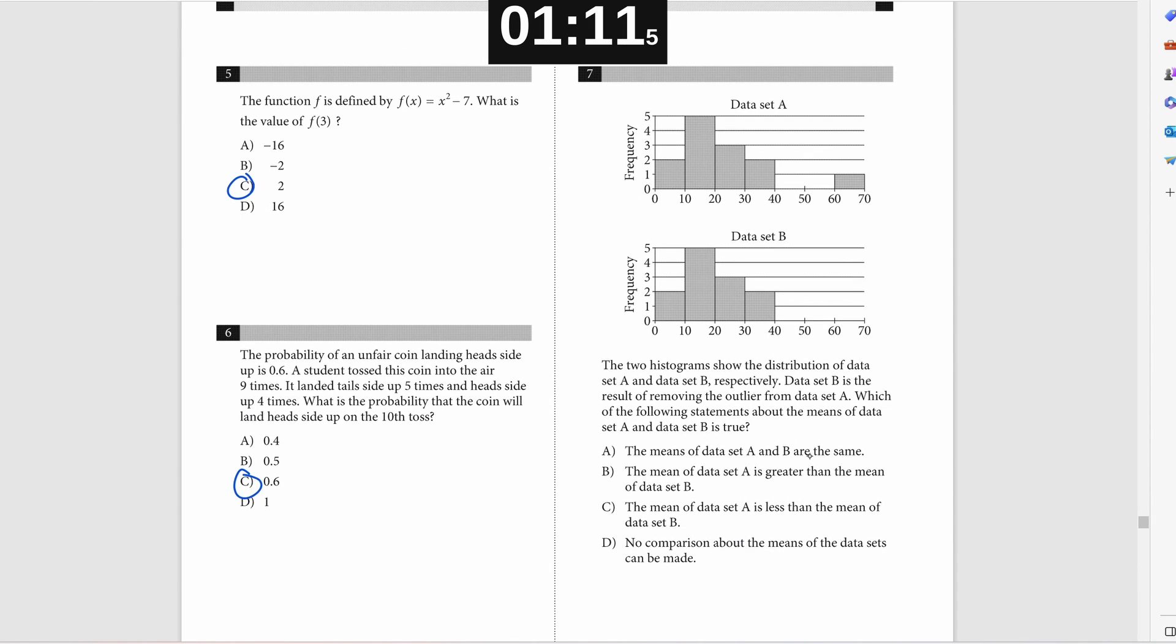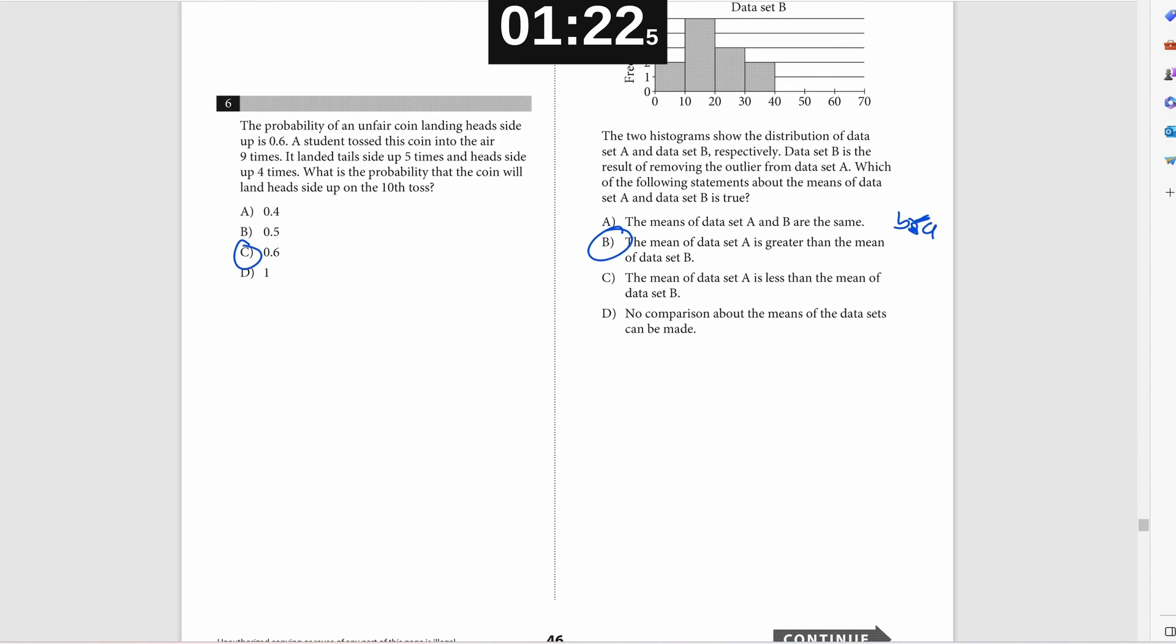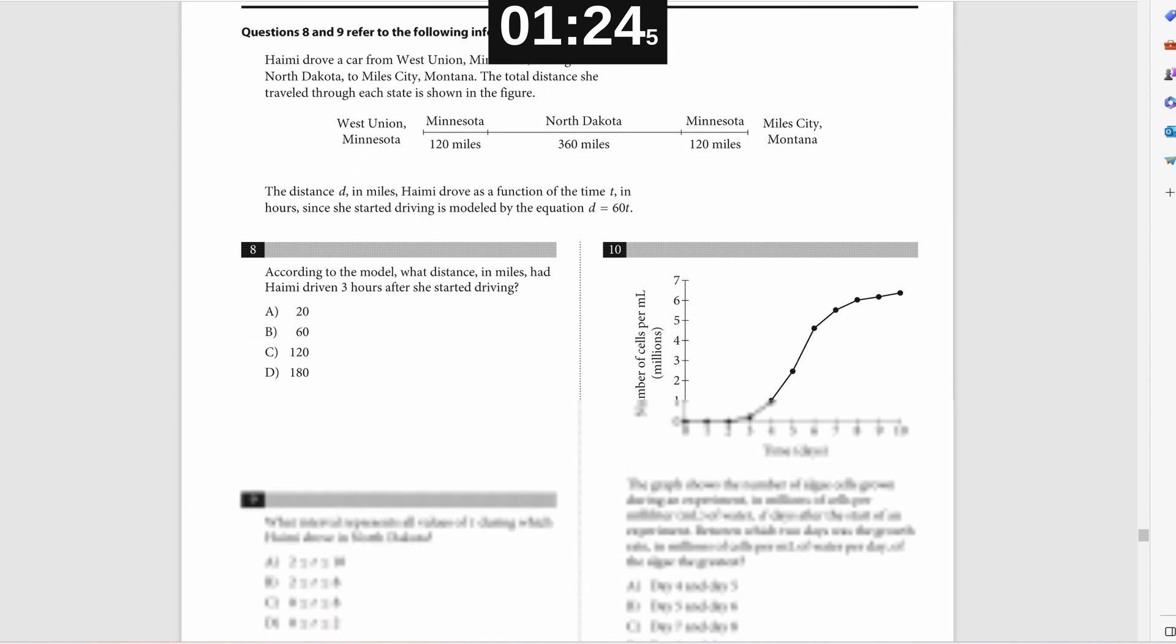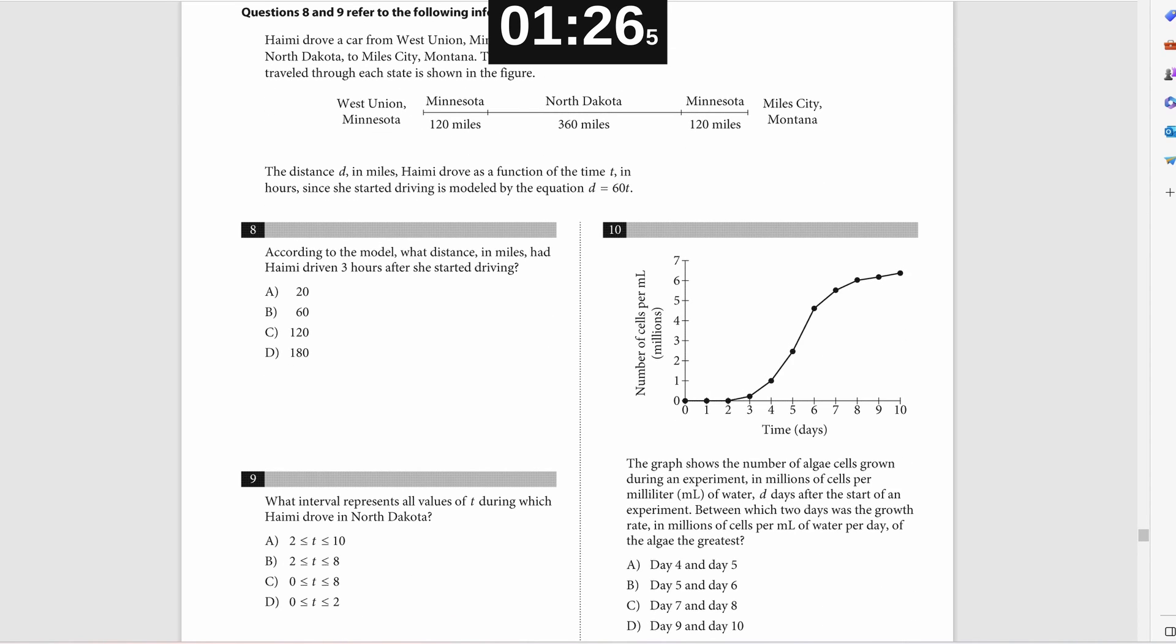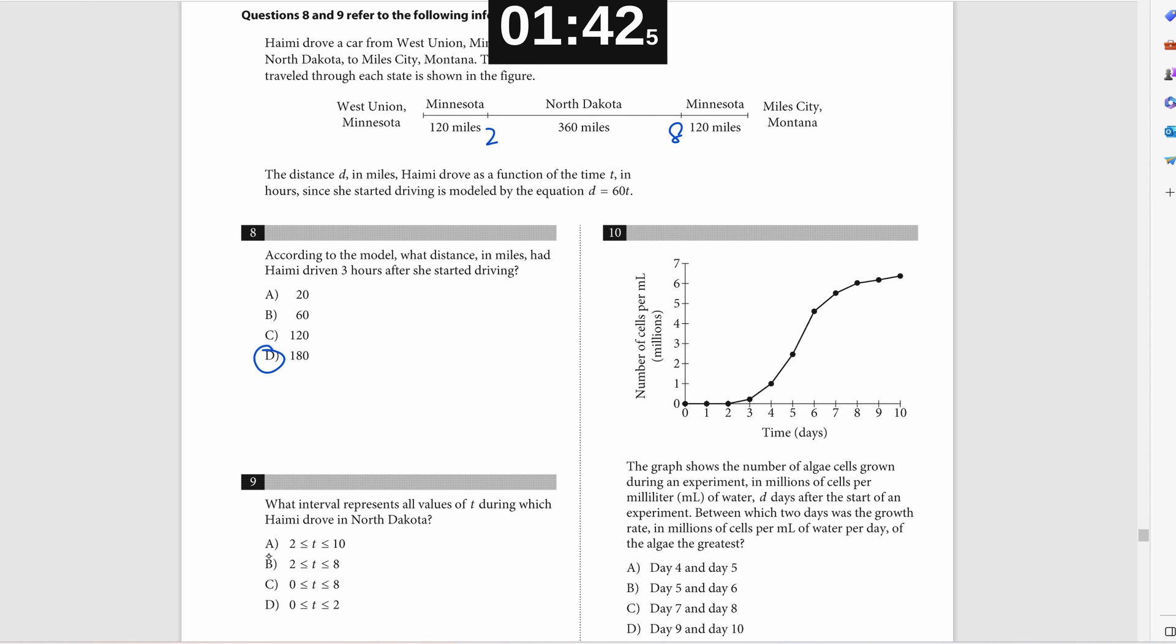Number seven, it's asking about how the mean changes as you remove an outlier. Since your outlier is very high, when you remove the outlier, your mean is going to decrease. So the mean of the first one would be greater. Problem number eight, you're given the function d equals 60t. 60 being the amount of miles you cover in every t, which is one hour. So if you're doing 60 miles in one hour, then after three hours, you're getting 180 miles. For problem number nine, same idea. You're just looking at how many hours it takes to cover 120 miles versus the next 360.